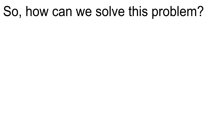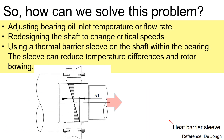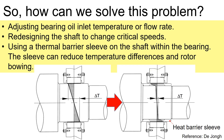So how can we solve this problem? Adjusting bearing oil inlet temperature or flow rate can alleviate thermal bowing. Also, you could redesign the shaft to change the critical speed. And using a thermal barrier sleeve on the shaft within the bearing can reduce the thermal bowing.